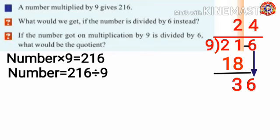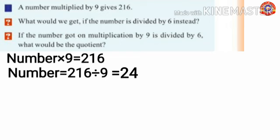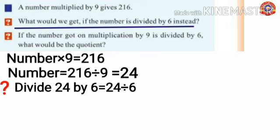How many times does 9 go into 36? 4 times. 4 into 9 is 36. 36 minus 36 equals 0. We get the quotient 24. Therefore the number equals 24. Now, what would we get if the number is divided by 6? Divide 24 by 6. How many times does 6 go into 24? 4 times. So 24 divided by 6 equals 4.